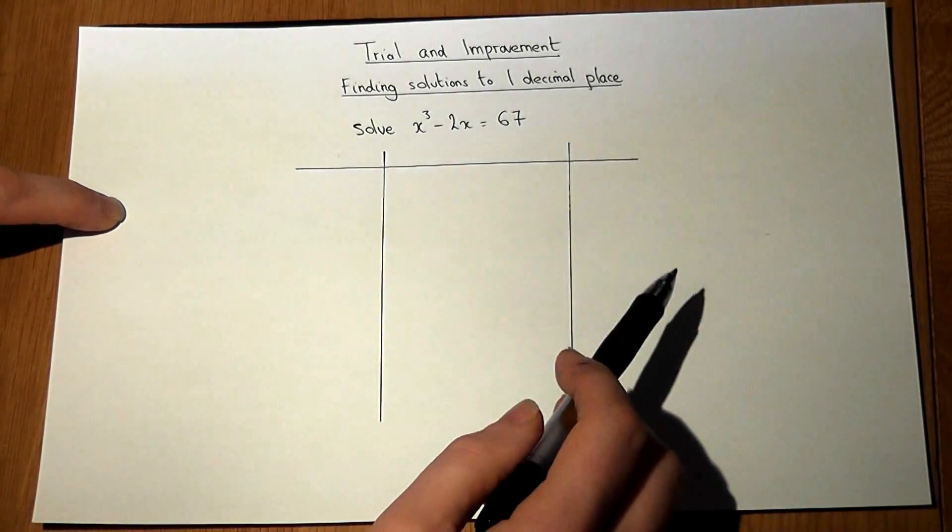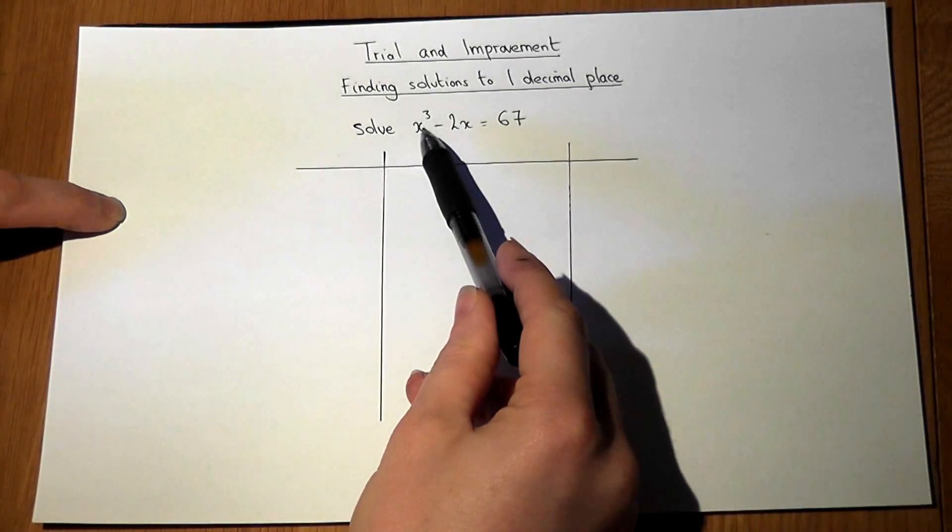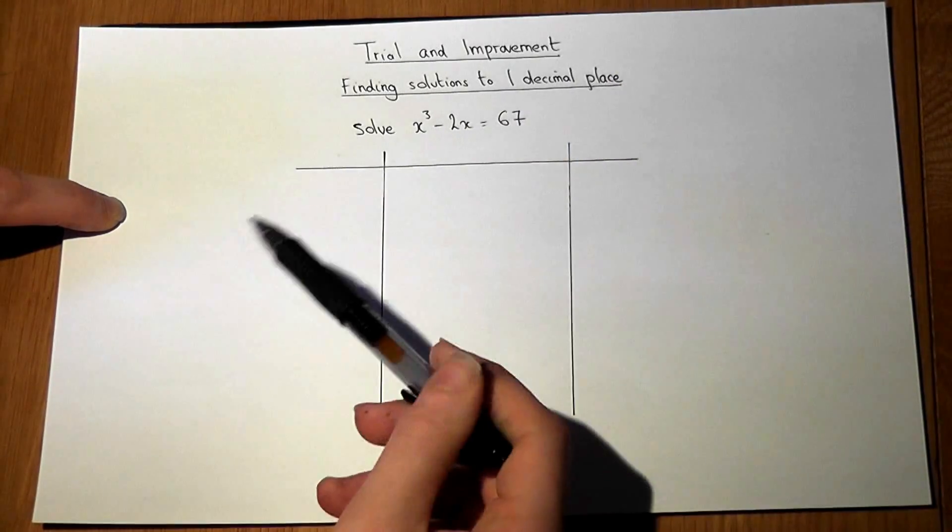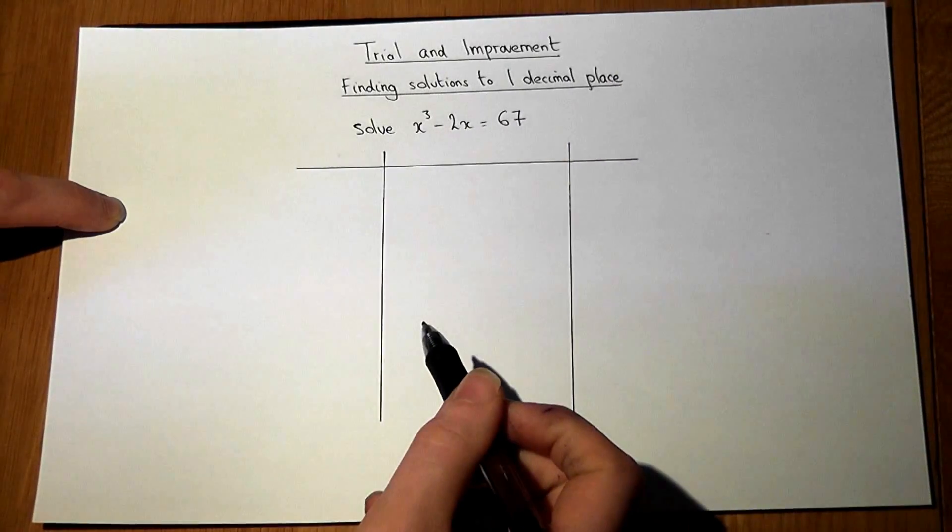In this video, we're going to try to find a value of x to 1 decimal place which gets as close to 67 as possible.